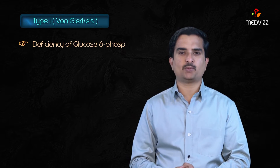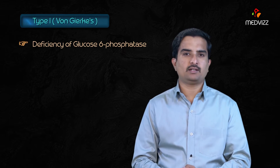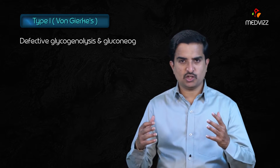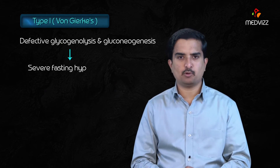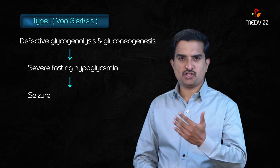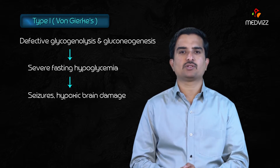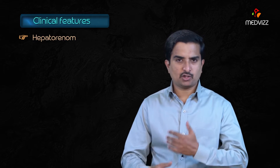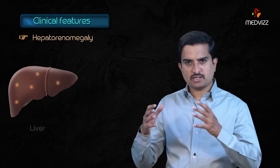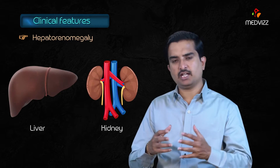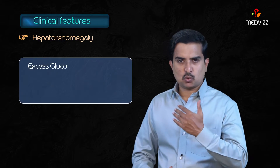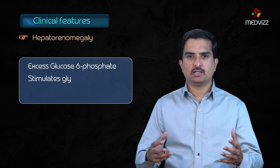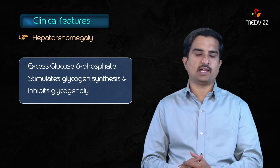Type 1, Von Gierke's disease, involves a deficiency of glucose-6-phosphatase enzyme, mainly located in the liver and kidney. This leads to defective glycogenolysis and gluconeogenesis, causing severe fasting hypoglycemia, seizures, and hypoxic brain damage. Hepatorenomegaly is seen as glycogen accumulates in the liver and kidney, because excess glucose-6-phosphate stimulates glycogen synthesis and inhibits glycogenolysis.